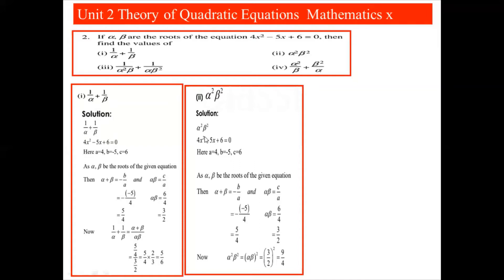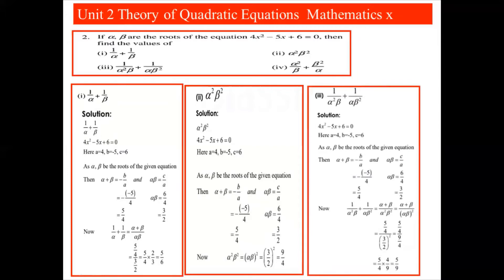For part 2, we evaluate α²β². The equation is 4x² - 5x + 6 = 0, with a = 4, b = -5, c = 6. Sum of roots = 5/4 and product of roots = 3/2. Now α²β² = (αβ)², and since αβ = 3/2, this equals (3/2)² = 9/4.